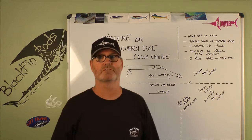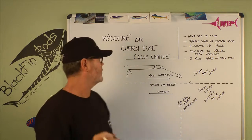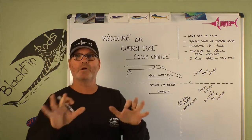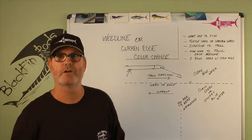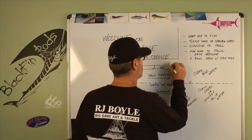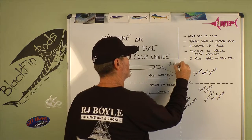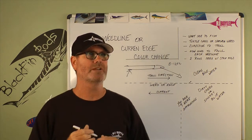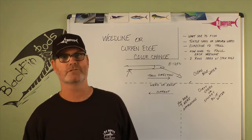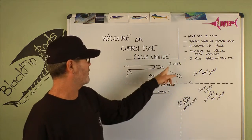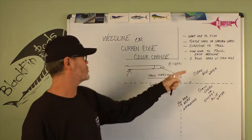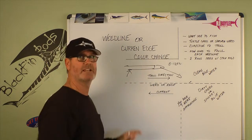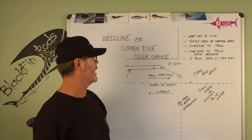I'm only fishing two spinners — that's it. As I troll up the weed line, I want to cover as much ground as I can, so I'll go 8 to 12 knots — that's a fast clip. An average dolphin troll is 7 to 8 knots, but right now I'm at 8 to 12 knots, traveling and making way with my strips with little lead heads behind them.